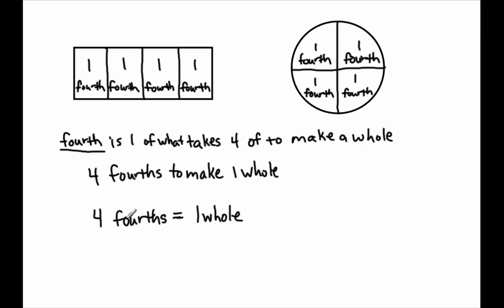Now I do want to clarify something. 'Fourths' is the noun — it's the unit we're working with. The number is the adjective — it's describing how many of the nouns I have. Numbers will always be adjectives; they tell us how many of something we have. The units will be nouns; they tell us what we're actually counting. So four fourths are the same as one whole, and every single share needs to be equal in order to be called a fourth.